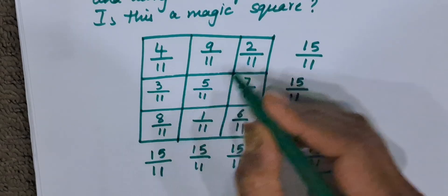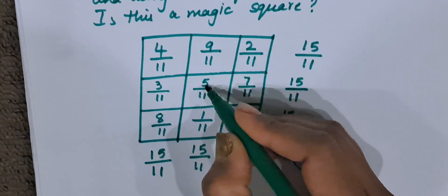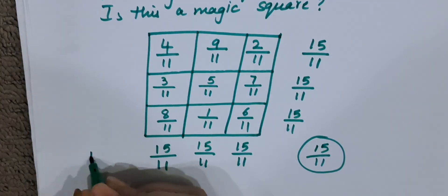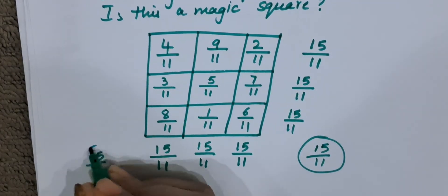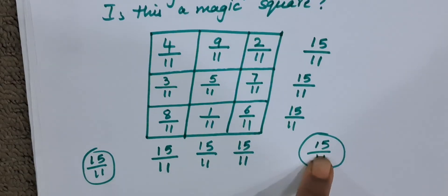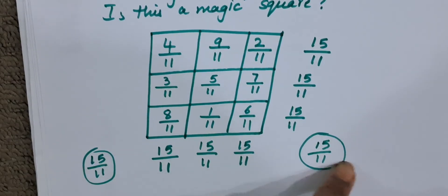Now this diagonal. 2 plus 5 is 7, 7 plus 8 is again 15. So it is 15 by 11. So when we checked both the diagonals, the answer is 15 by 11.